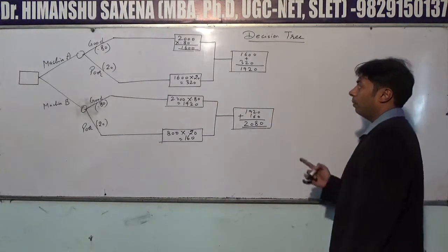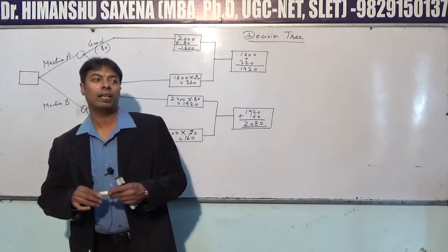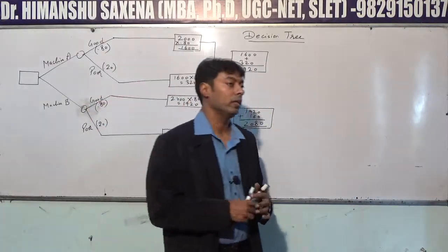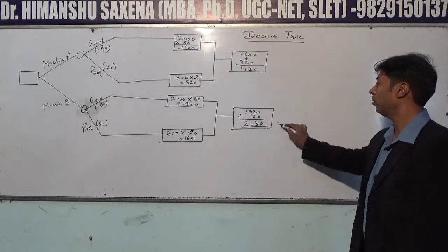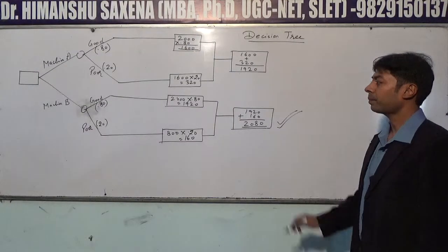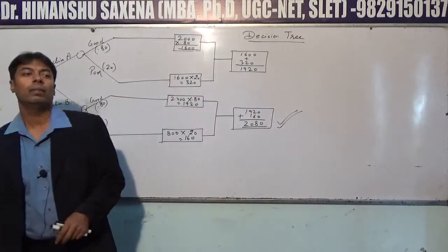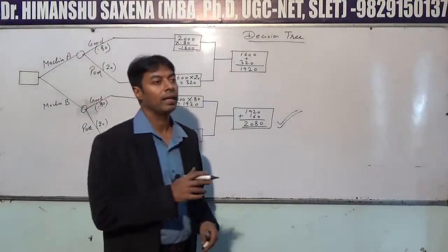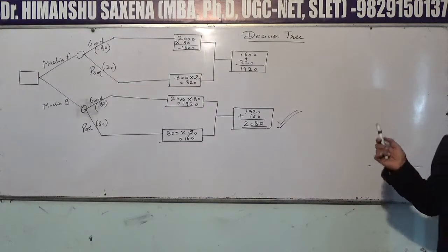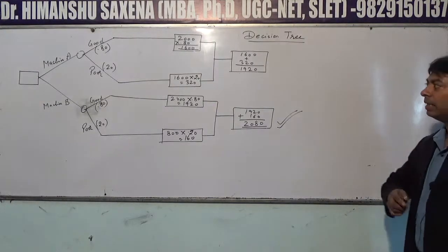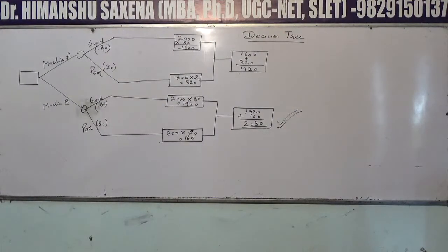From both alternatives, the one with the higher value is selected. The highest value is 2,080, so the conclusion is that Machine B will be selected. That is the final answer for this decision tree problem.